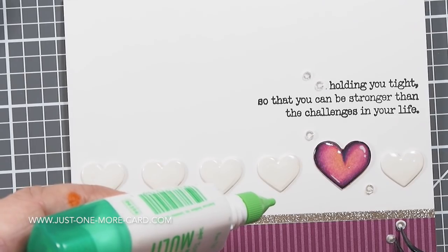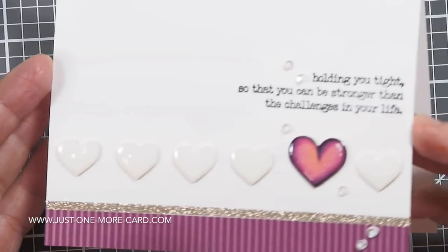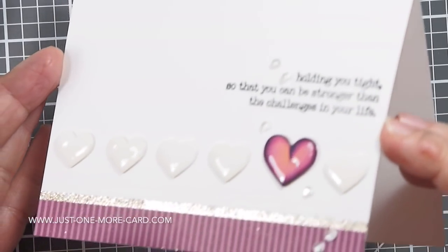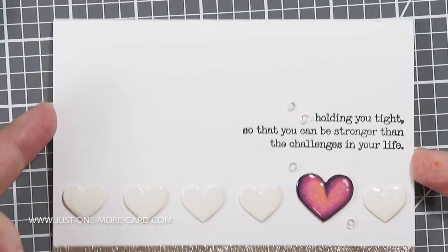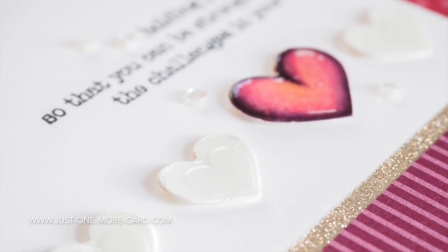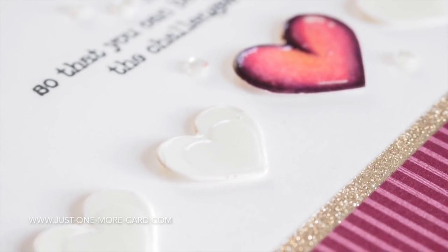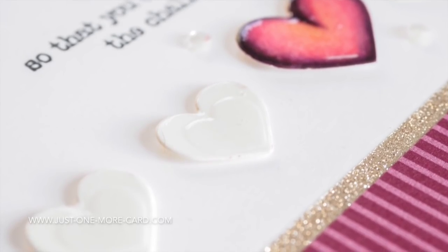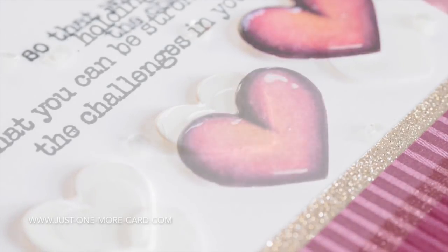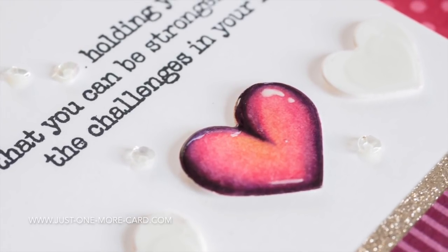I'm using a Tombow Mono to adhere some sequins from Pretty Pink Posh, and don't worry, this will dry absolutely clear so you won't see the glue anymore once it's finished. But they have this beautiful dimension and shimmer from the glossy accents on the hearts. Now here's the close-up of the white heart and that additional embossing that we did—it's very subtle, but it's just this little detail that really makes your card perfect.